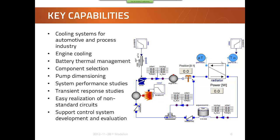By the available components, it's easy to realize non-standard cooling circuits. The picture shows a simple example of how a system model based on liquid cooling can look — with typical components like a pump, volumes, a thermostatic valve and a simple heat exchanger model for a radiator. The models can also be used to support control system development, where a dynamic model of the cooling system is very helpful for controlling pumps, fans and valves, and to optimize the system layout and control system.